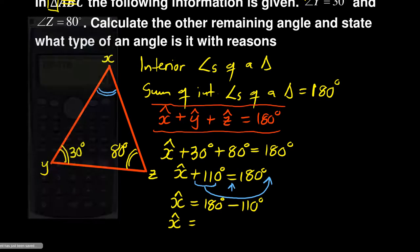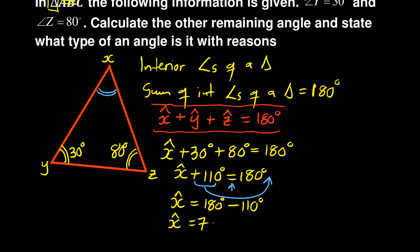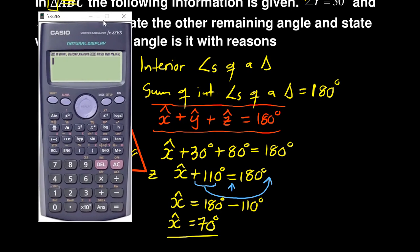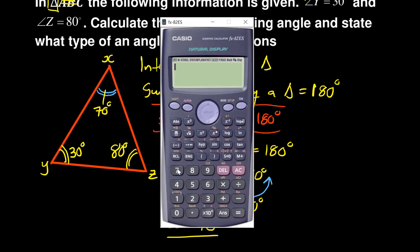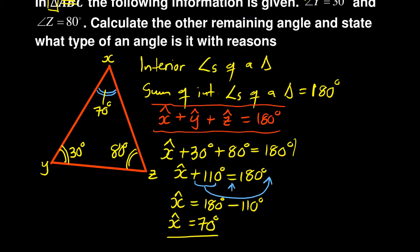So angle X in this case equals 70 degrees. You can actually test your answer - to check if you're right, you must add those angles: 70 plus 30 plus 80. They must give you 180 degrees. Also, alternatively, at this stage...